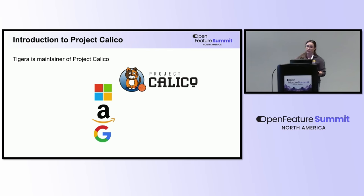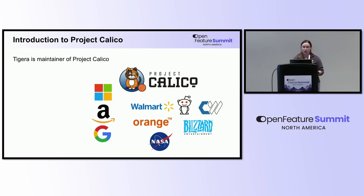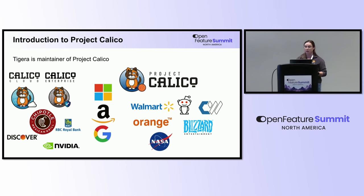We know these companies are using it since they post PRs or issues on our GitHub. CoreWeave is actually running Calico with massive clusters using our eBPF data plane, and they're giving a keynote on Wednesday morning. If you're running in Microsoft Azure, Calico for Windows is the only option for a hybrid cluster. We also offer Calico Cloud as a SaaS offering, and Calico Enterprise for in-house deployments, with customers like Chipotle, NVIDIA, RBC, and Discover.